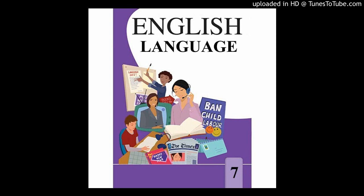Now, in the sentences I just explained, all the nouns are in singular number — Rama's book, brother's bat, uncle's house. The possessive case for singular nouns is formed by adding an apostrophe and an S to the noun.